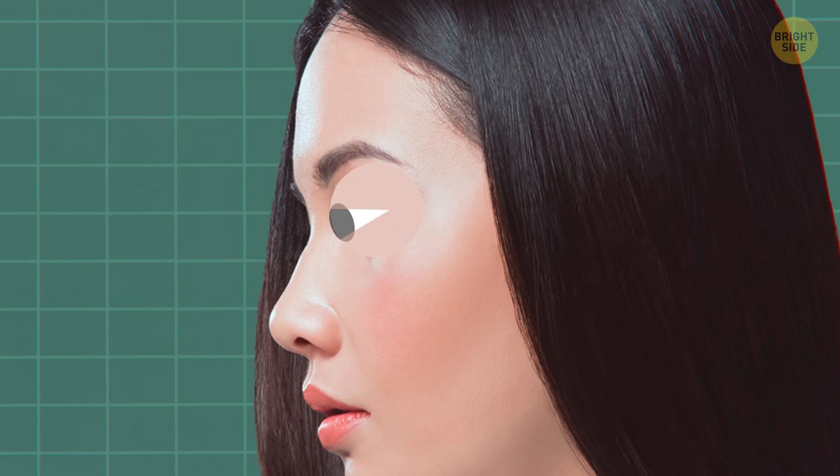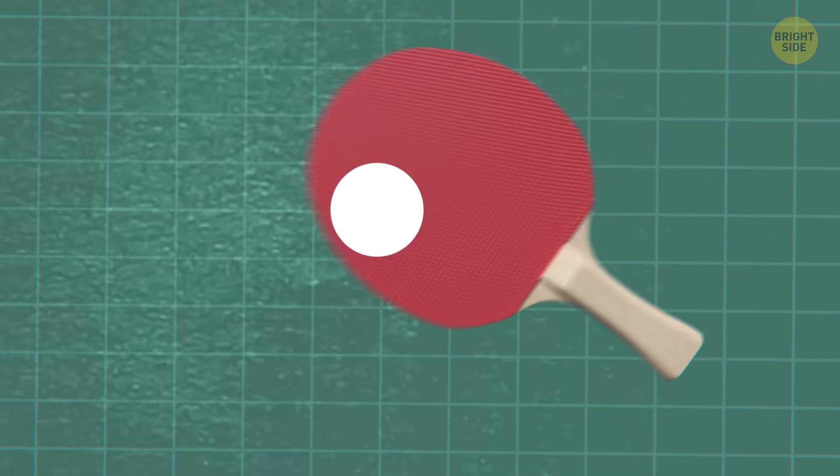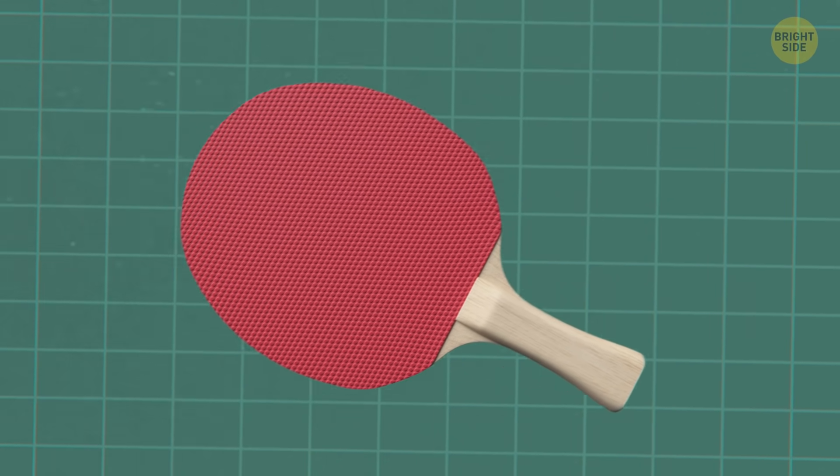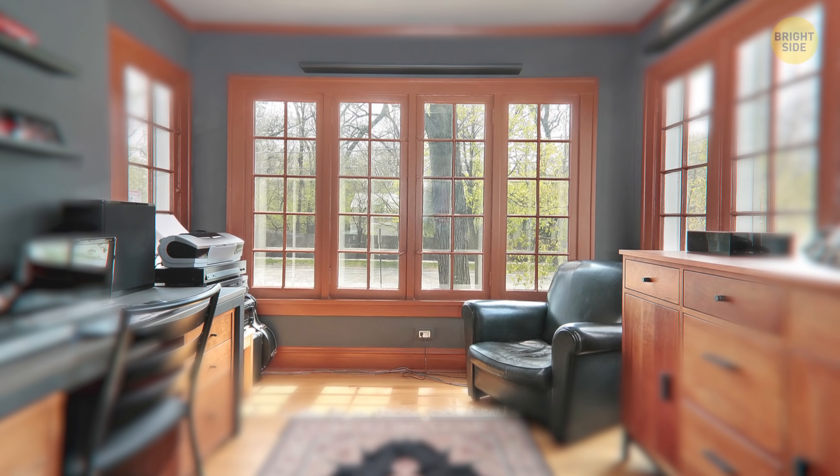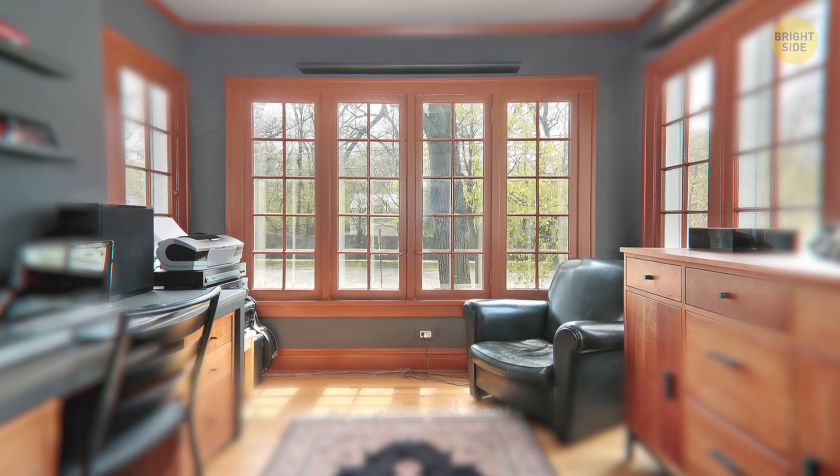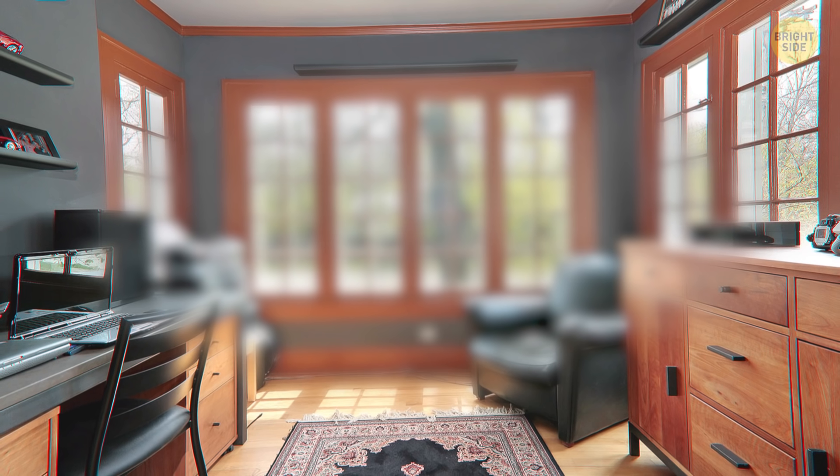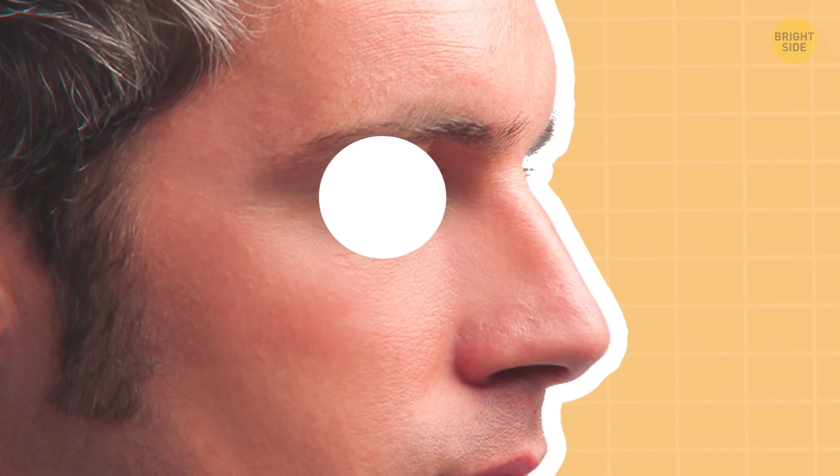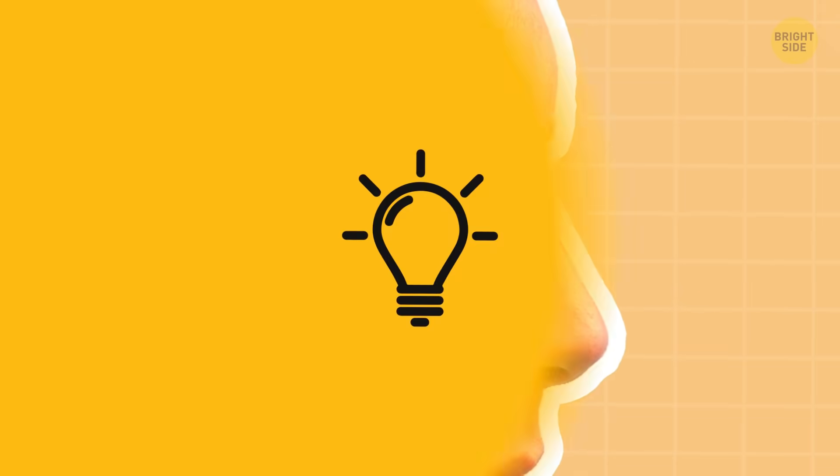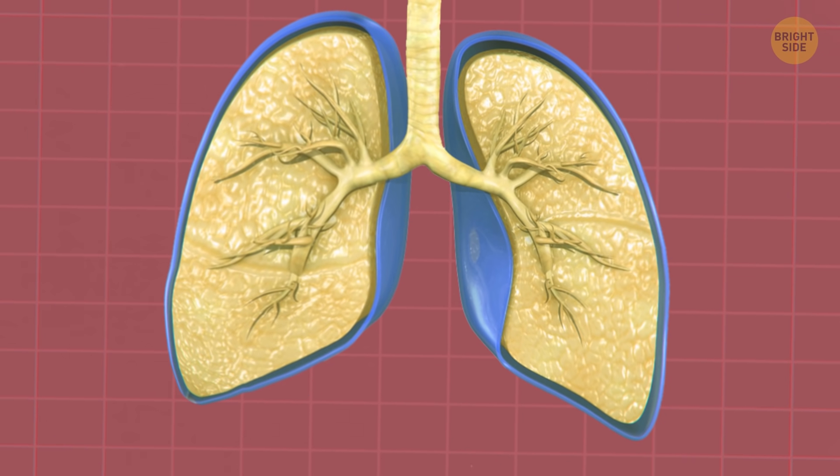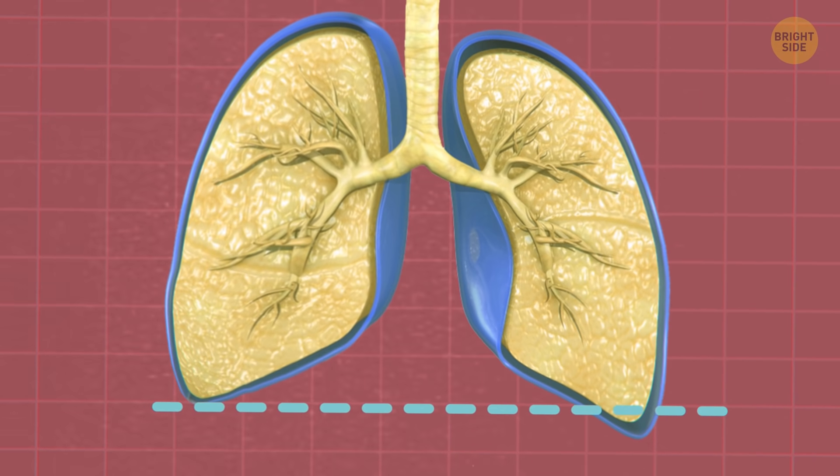Only one-sixth of your eyeball is visible. The whole thing is about the size of a ping-pong ball. If you're farsighted, you see things better far away, it means your eye is shorter than normal. Nearsightedness, when faraway objects are blurry, means a longer-than-usual eye. Your right lung can hold more air than the left one, but it's shorter to make room for the liver below it.